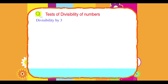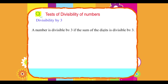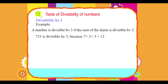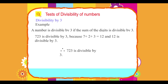Divisibility by 3: A number is divisible by 3 if the sum of the digits is divisible by 3. Example: 723 is divisible by 3 because 7 + 2 + 3 = 12, and 12 is divisible by 3. Therefore, 723 is divisible by 3.